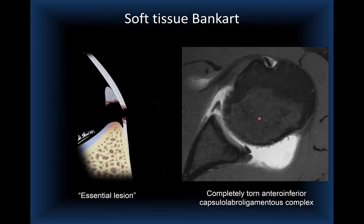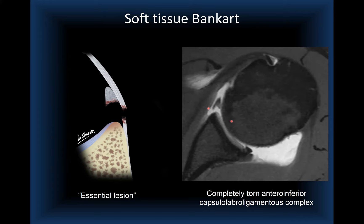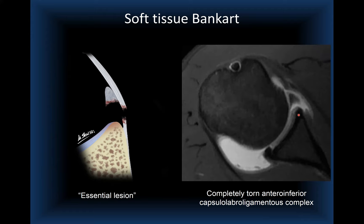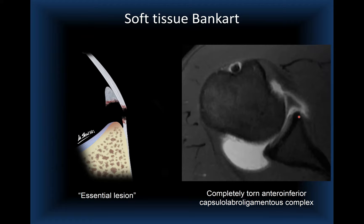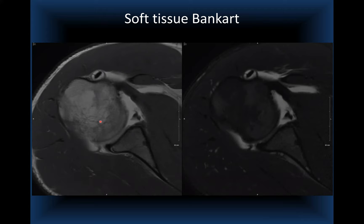On axial T1-weighted MR arthrogram images, you can see complete detachment of the anteroinferior labrum with disruption of the periosteum. As we continue inferiorly, the whole complex is detached. Another case shows the anteroinferior labrum completely separated from the anteroinferior glenoid rim, and a third case on T1 non-fat-sat and T2 fat-sat confirms complete detachment of the soft tissue Bankart.